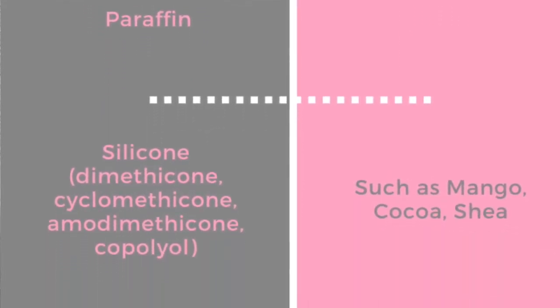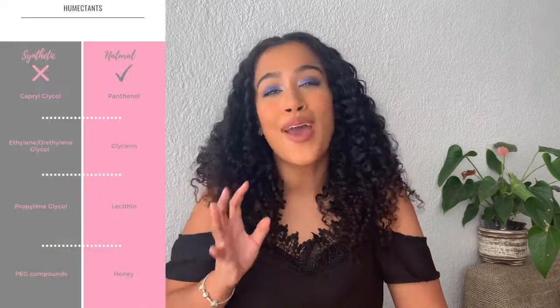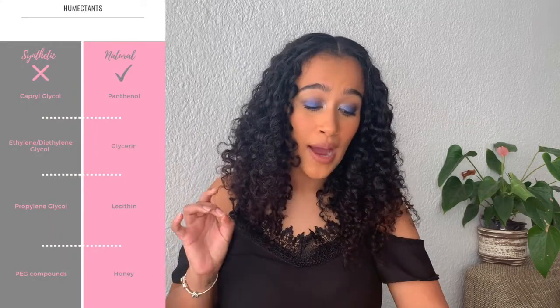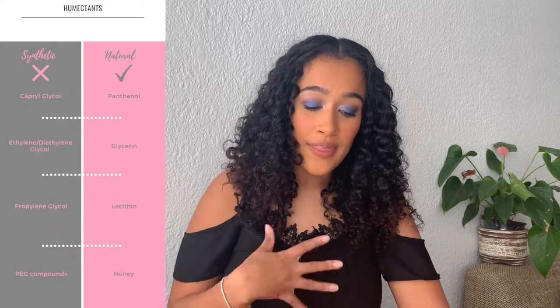Natural emollients are naturally found in nature and are easily absorbed by the hair. They include natural oils and butters. They can cause some build-up, however it takes much longer to form a film around the hair and therefore won't suffocate your hair as quickly as a synthetic one. If you're using natural emollients, go for a clarifying wash every four to six weeks just to make sure you're getting rid of whatever gunk has built up.